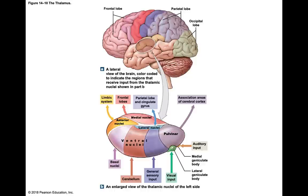Most of the neural tissue in the diencephalon is in the hypothalamus and the thalamus. The epithalamus is a small area containing the pineal gland, which produces melatonin. Melatonin helps keep your day-night cycle — it's released right before you go to bed so you get sleepy, then the levels drop and you wake up.